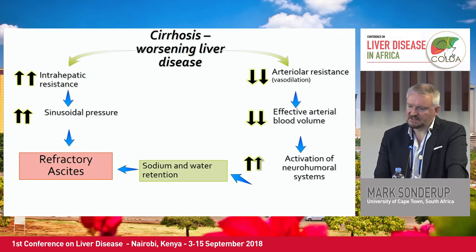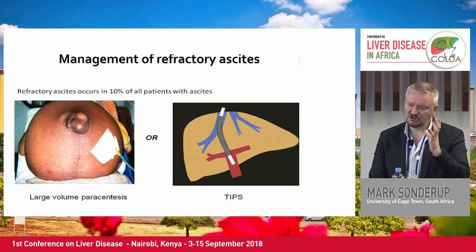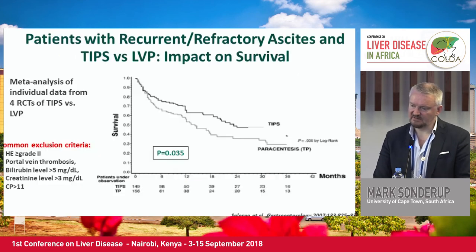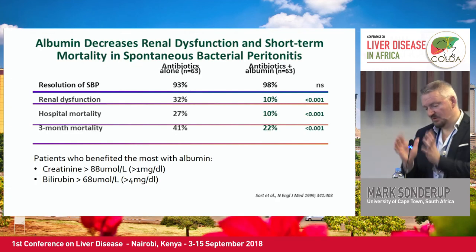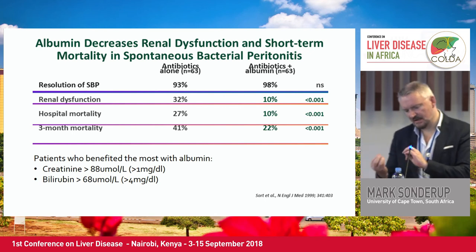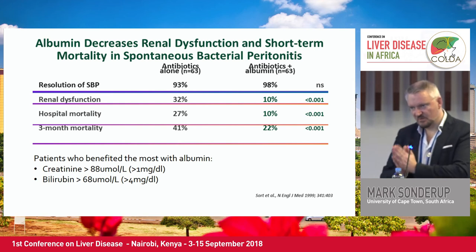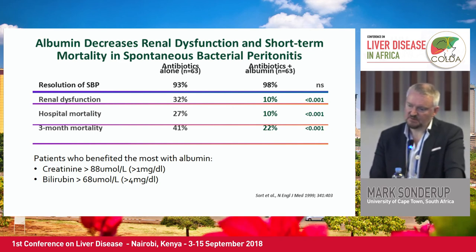Refractory ascites — either diuretic resistant or diuretic intractable — is largely not relevant to this environment as TIPS is not widely available, so large volume paracentesis is what we will have to continue with. To finish on albumin: there is one situation where albumin clearly has level 1a evidence of benefit, and that is in patients with SBP. Albumin plus antibiotics for SBP has demonstrated survival and mortality benefit versus antibiotics alone. So if a patient has SBP, the sooner you start supplemental albumin the better.